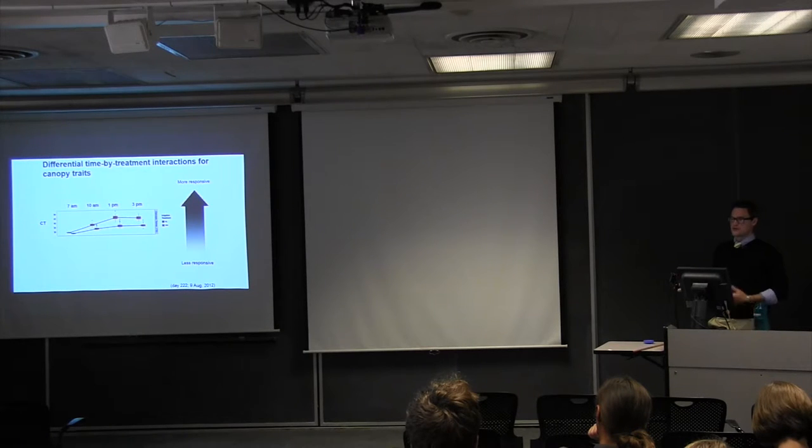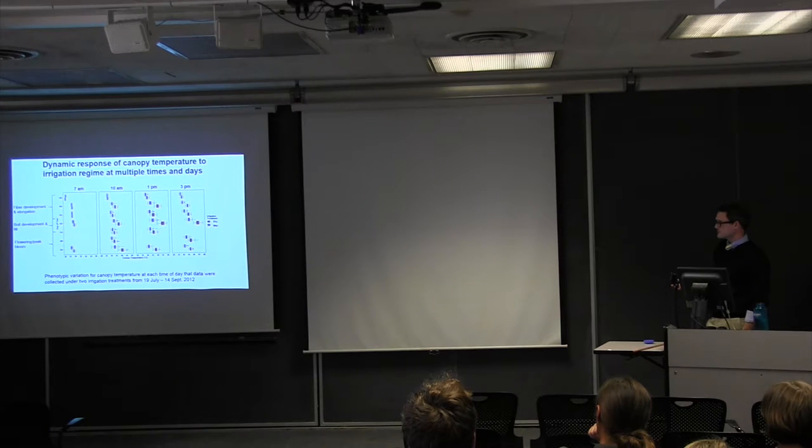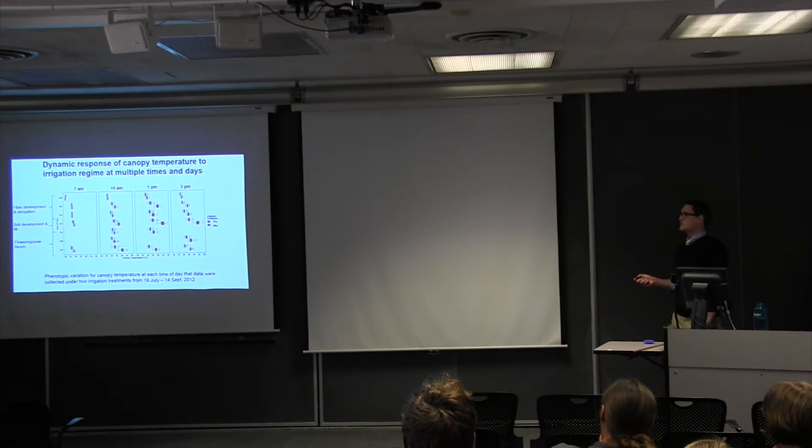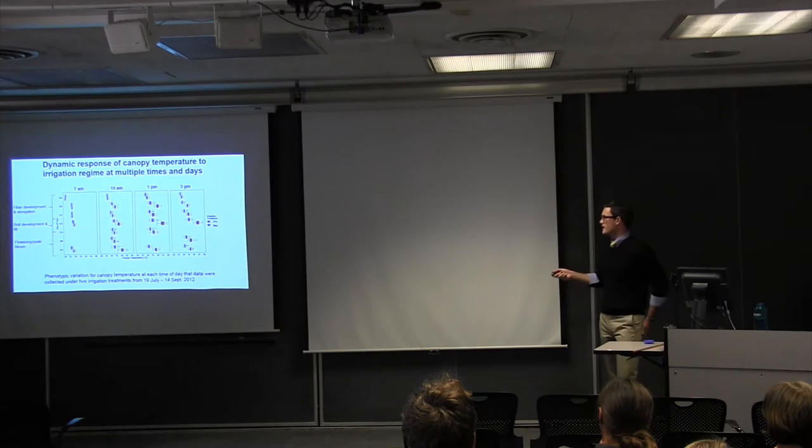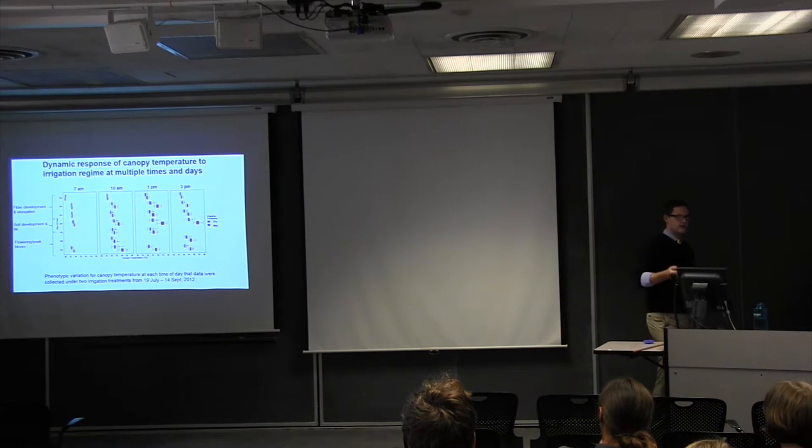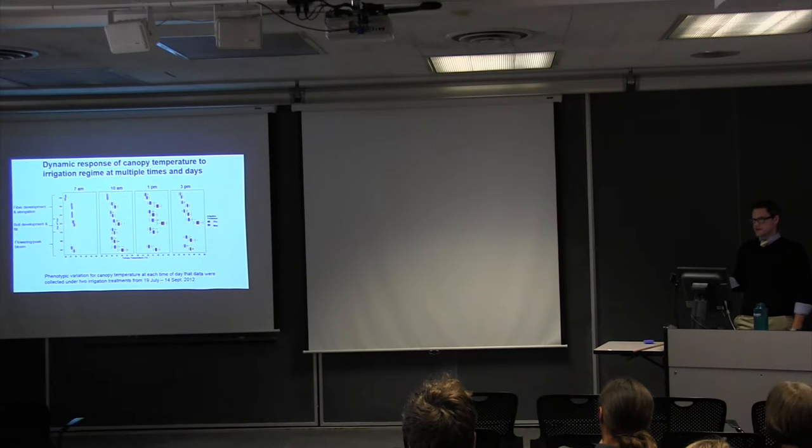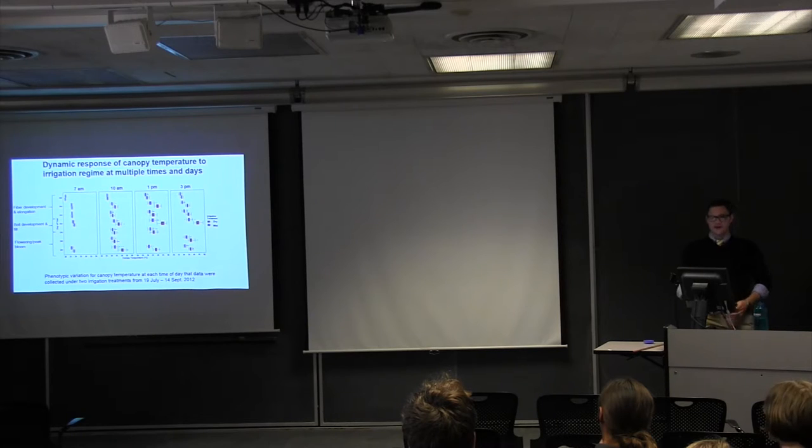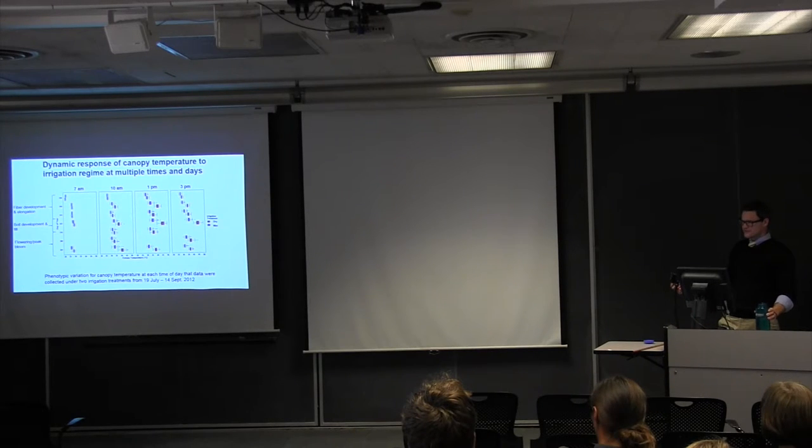And so finally, I just want to focus on canopy temperature here. So that was just over the course of one day. But do we see that same effect over the entire season? And sure enough, when we look at those same four time points across the top, and then on the bottom here is the actual canopy temperature values. And then the days of the season along the left-hand axis. We see that, sure enough, this dynamic response of cotton to increased temperature and irrigation regime is consistent. And I've listed the plant developmental stages on the left-hand side as well, basically to highlight that this response is consistent across the plant's development, which is good for us.